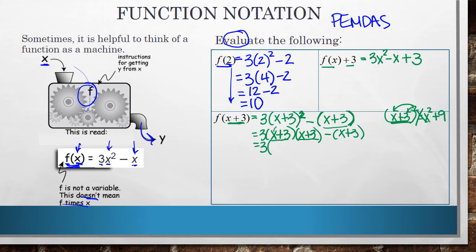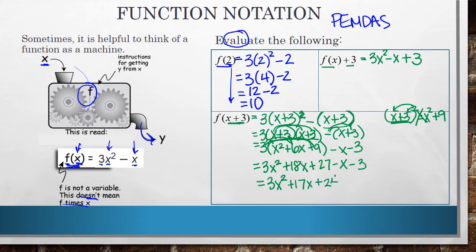So now when I multiply this out, I get x times x is x squared. x times 3 is 3x. 3 times x is 3x. Add those together and you get 6x. And then 3 times 3 is 9. And then I'll distribute this negative sign through so I get minus x minus 3. Now I'll distribute this 3 to each of these places. So 3 times x squared is 3x squared. 3 times 6x is positive 18x. And 3 times 9 is positive 27. And then I still have this minus x minus 3. And now I'll combine like terms. And I get 3x squared plus 17x plus 24.